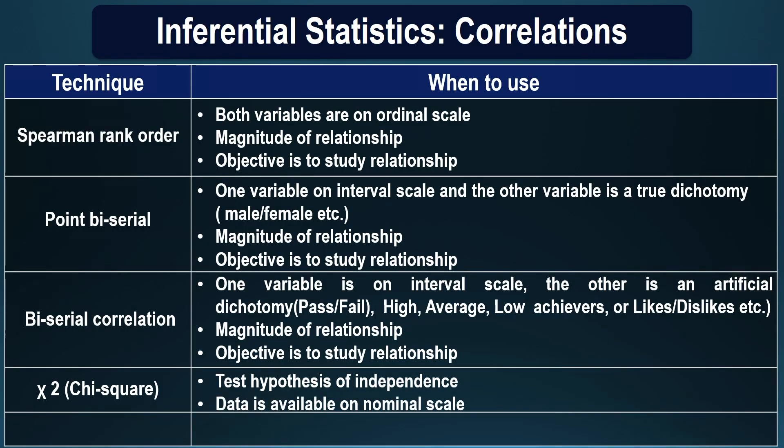Chi-square is another frequently used technique where you would like to test the experimental hypothesis of independence. If you are interested in finding out whether the performance of a student is independent of their use of right or left hand, then chi-square can be used to test this hypothesis, and here the data is available in frequencies. The data is on a nominal scale where you have left-handers and right-handers and you find out how many have shown high performance.